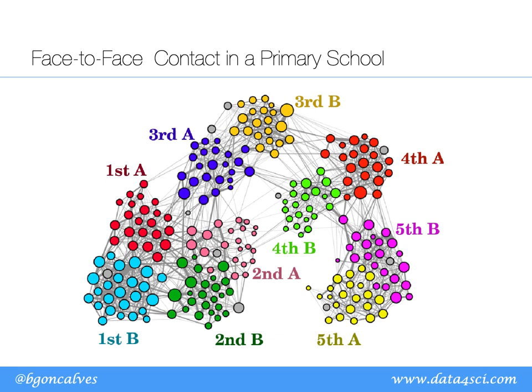One of my favorite examples is the face-to-face contact network in a primary school, done by researchers in France and Italy. They gave little badges to children from first to fifth grade, with each grade having two classes A and B. The badges measured whenever two children interact face-to-face. You can see how children tend to associate with others in their class or within their age range — very few connections between fifth grade and first grade students, but many more between adjacent grades.